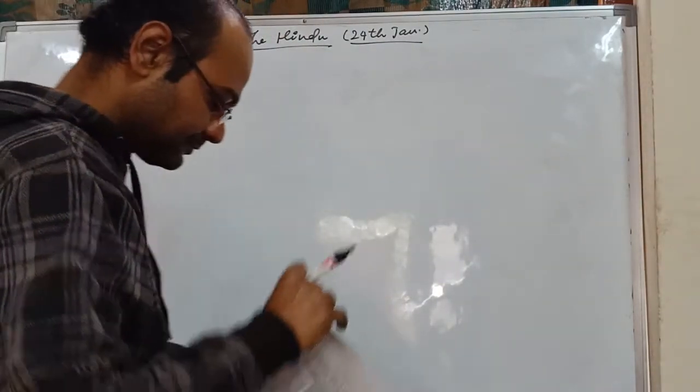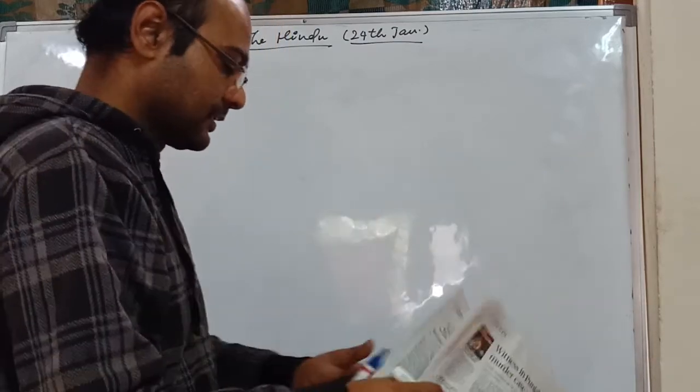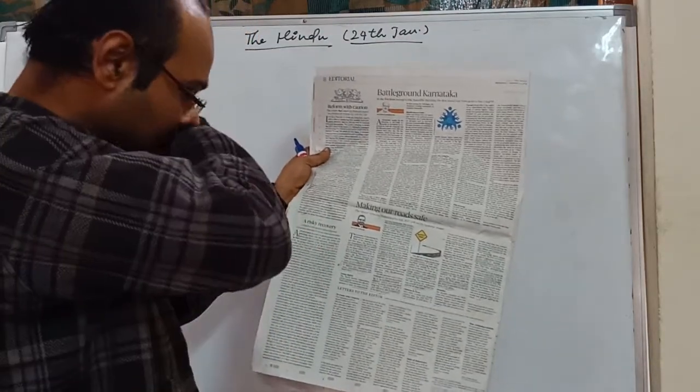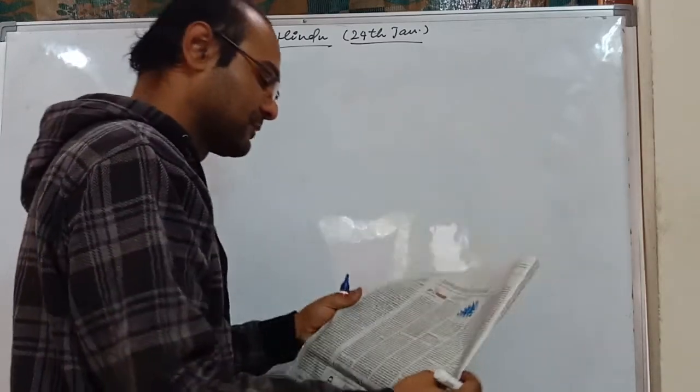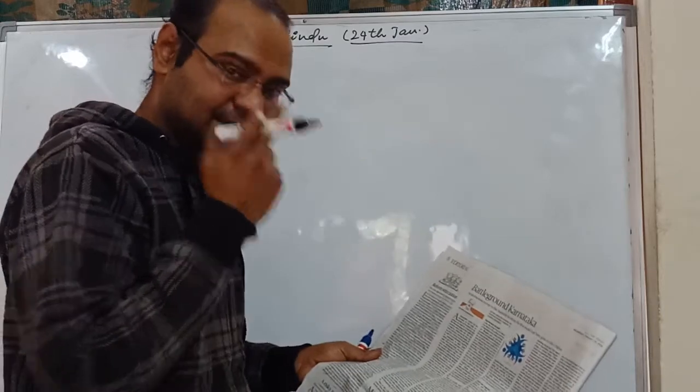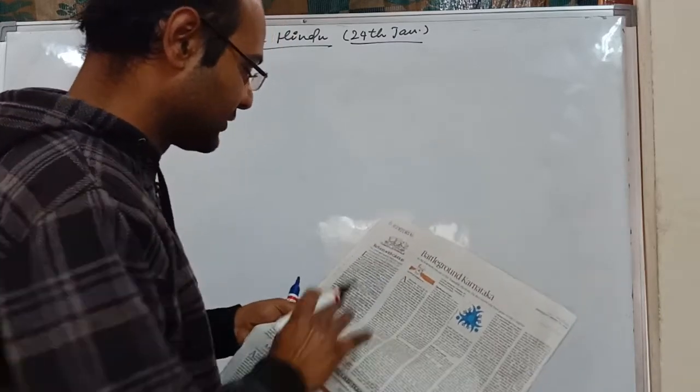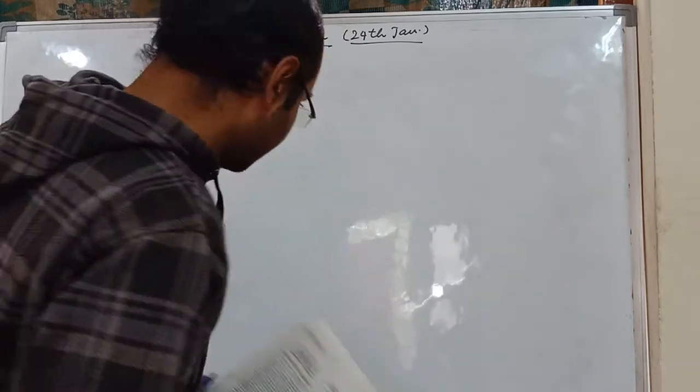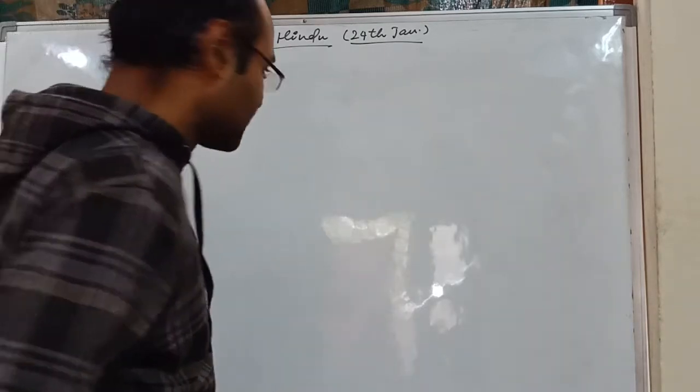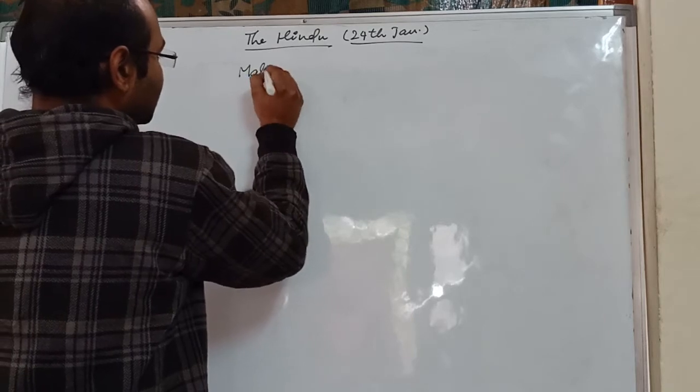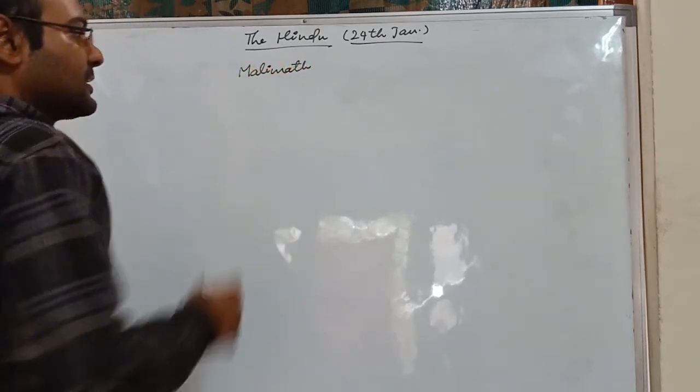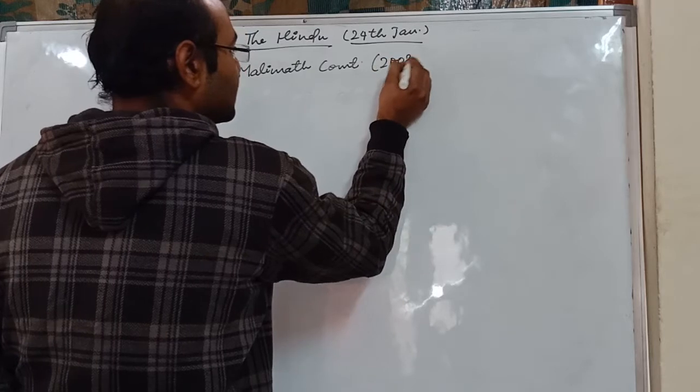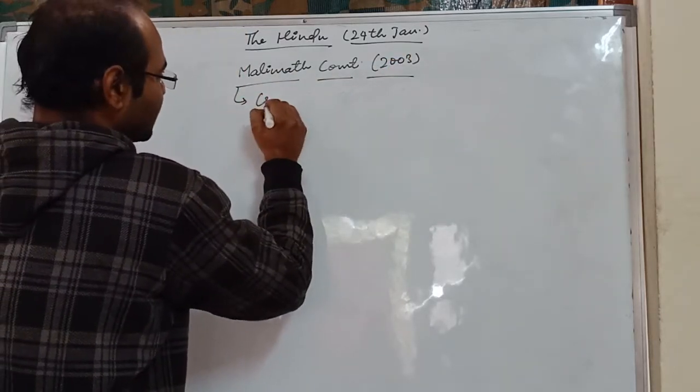On the editorial page, the second editorial is regarding the world economy which is not very important. The first article is purely political regarding the election in Karnataka, also not important. There is an editorial 'Reformed with Caution' which is basically dealing with the Malimath Committee report but saying that the government should proceed with caution. A little bit about Malimath Committee - suppose in prelims they ask, Malimath Committee report relates to what? Malimath Committee which was formulated in 2003 is based on the criminal justice system.